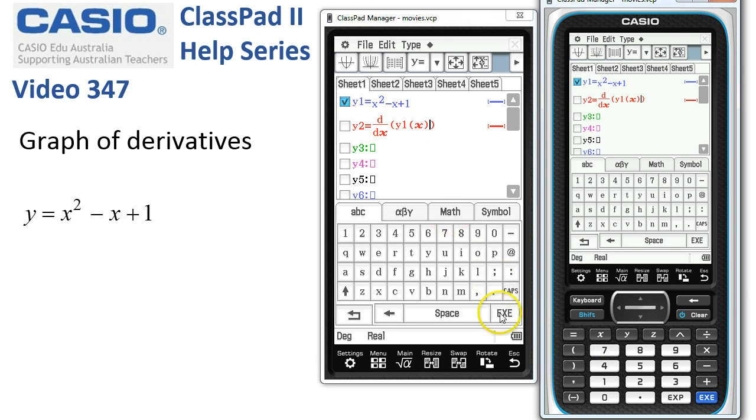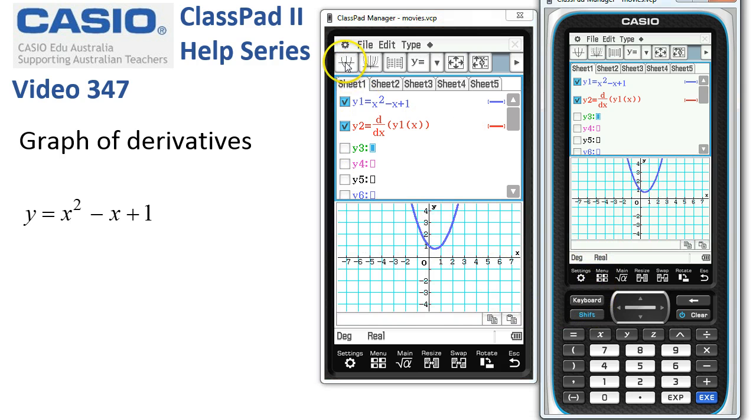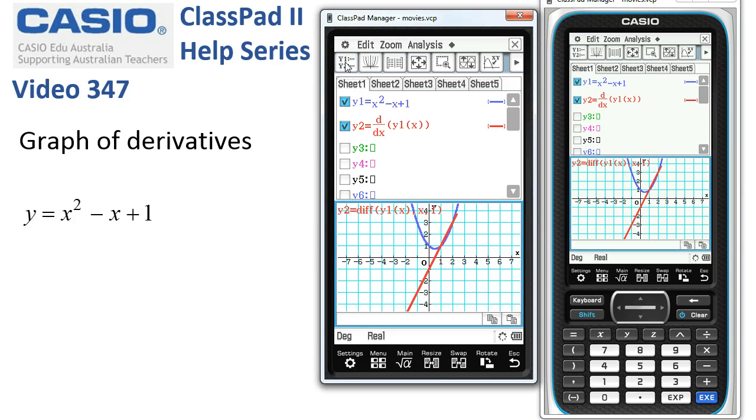And tap Execute and that one's locked in. So let's get rid of the keyboard and have a look at the graph now. So the first one, red, the blue line here is the original function and the red one is the graph of the first derivative. And if we differentiate a parabola, we get a straight line.